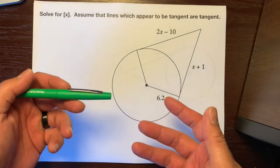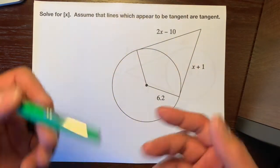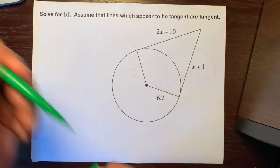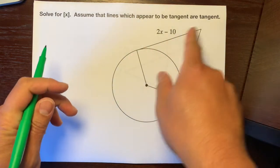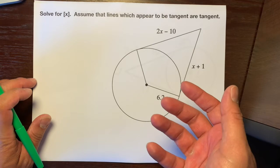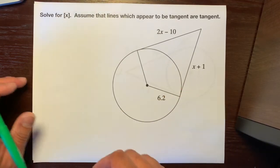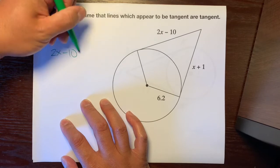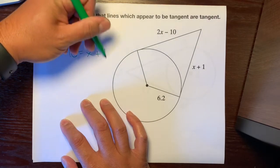So what we're going to use is the tangent tangent theorem, or the two tangents theorem. And that just tells us that whenever you have two lines that intersect each other that are tangent lines, they're congruent. So what you can do is, you can write 2x minus 10 is equal to x plus 1.